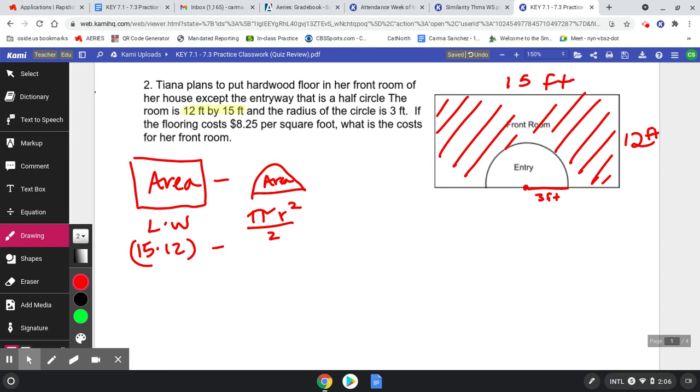Well, I know that my radius is three, so three squared is nine, right? So nine pi over two is going to be my area of that semi-circle. Now I can go further to simplify that instead of keeping it in terms of pi like we used to in our old math classes.